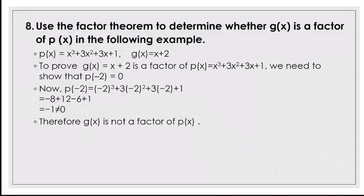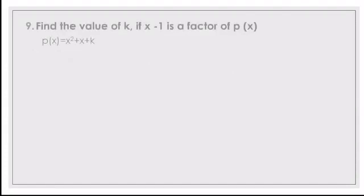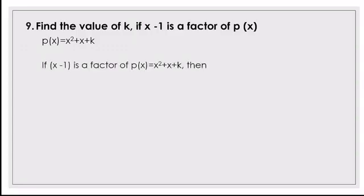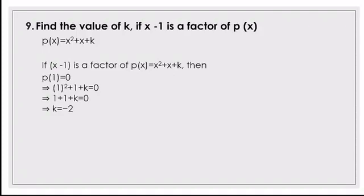Next question: find the value of k if x minus 1 is a factor of p(x) = x² + x + k. This is a very important question. By the factor theorem, if x minus 1 is a factor, then p(1) = 0. Substituting: 1² + 1 + k = 0, which gives 1 + 1 + k = 0, so 2 + k = 0, therefore k = -2.